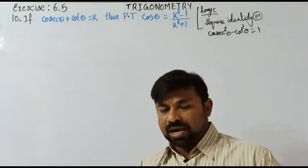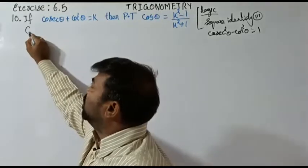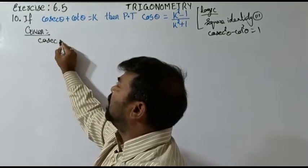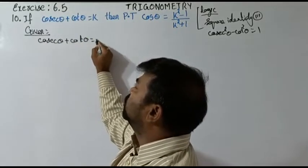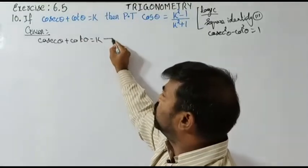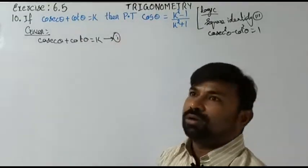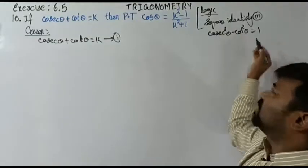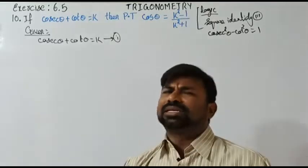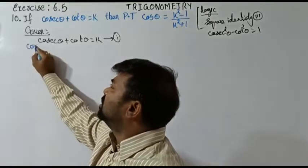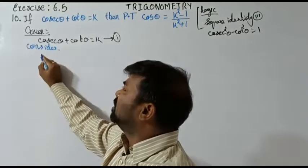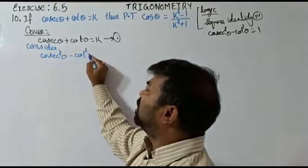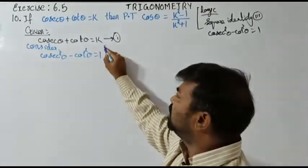Given for us: cosecant theta plus cot theta is equal to k — let's call this equation 1. Now consider square identity 3: cosecant squared theta minus cot squared theta is equal to 1.